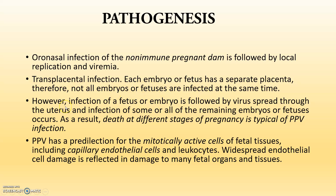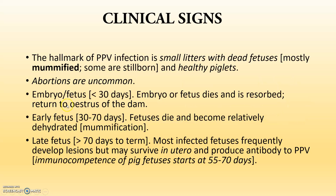The embryo gets infected and it will start mummification and embryonic death. The mummified fetus and dead aborted fetus are the main findings, and healthy piglets will not come out. Abortions are uncommon. If before 30 days, the embryo or fetus will die and is resorbed, and the dam will return to estrus. If transmission is in the 30 to 70 days period, the fetus will die and become relatively dehydrated — that is mummification.